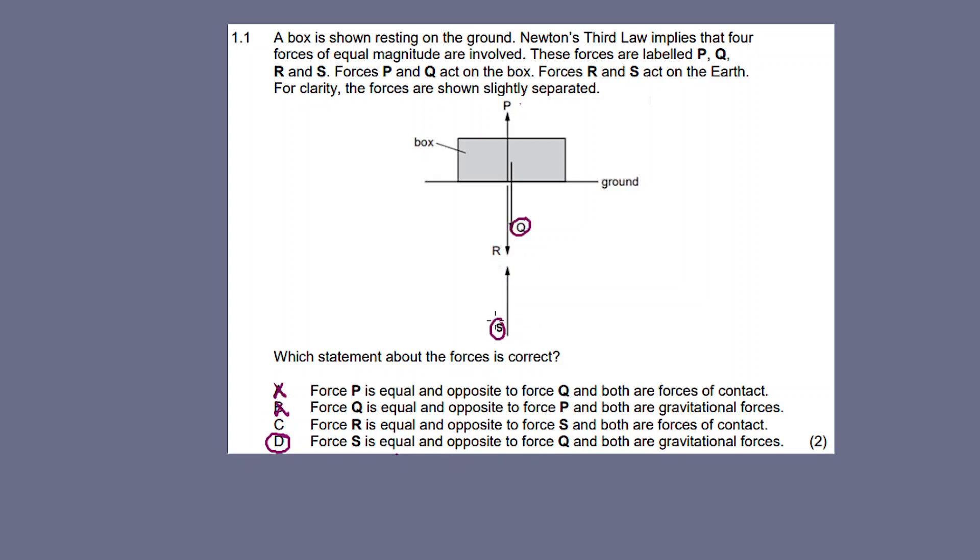The answer is D: S is equal and opposite to Q, and both are gravitational forces. Q is the gravitational force applied on the Earth, and S is the gravitational force applied on the box. So the answer is D. Check out the description box for more content.